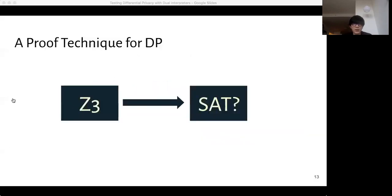So in our implementation, we use the SMT solver Z3. And we pass an SMT model that represents the formula shown on the previous slide to Z3 and ask, is the model satisfiable or not? So a satisfiable model corresponds to passing the differential privacy test, while an unsatisfiable model fails the test.